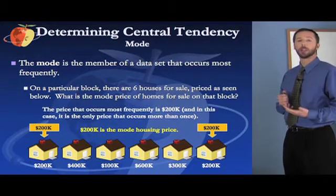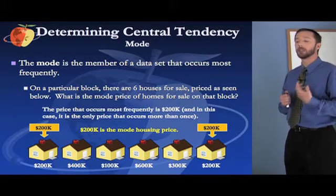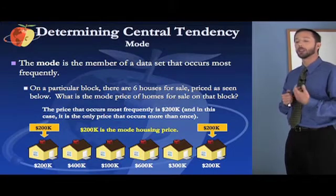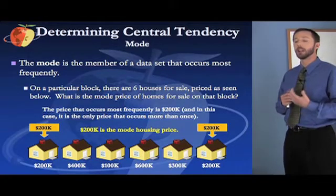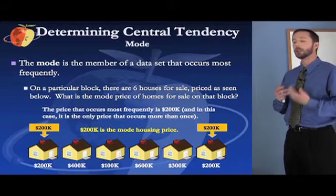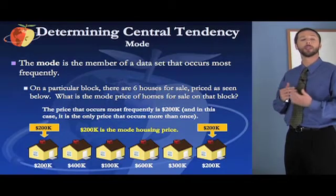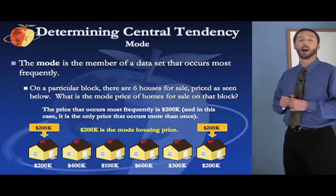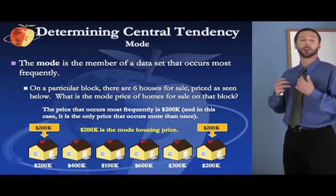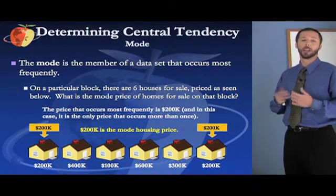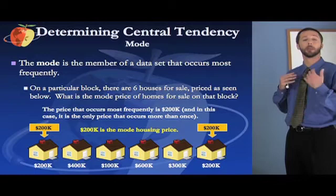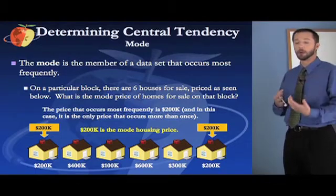The last way you need to know for the test of finding central tendency is mode. Mode is the member of a data set that occurs most frequently. It's very useful when you're trying to find what is most popular — for example, what is the most popular brand of cologne worn in the United States. If you survey a large group of people, whichever one comes up the most is probably the most popular — that's the mode.